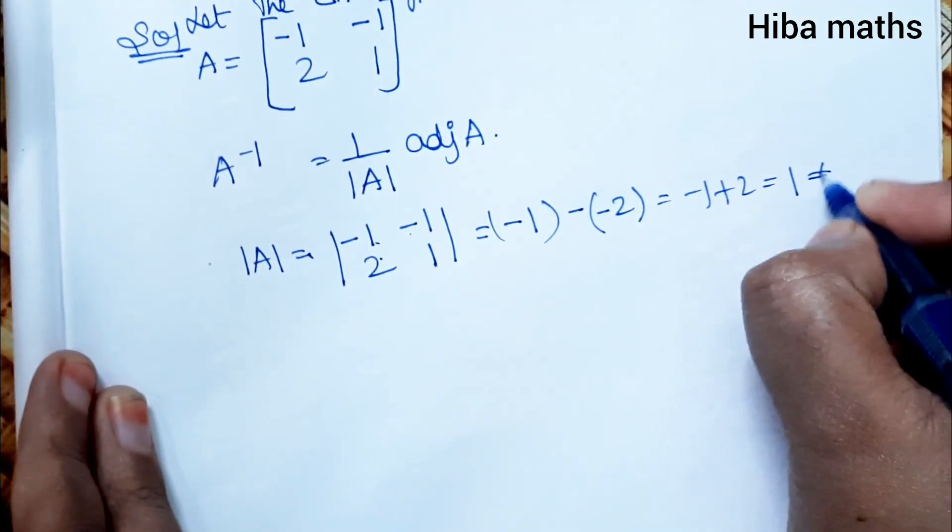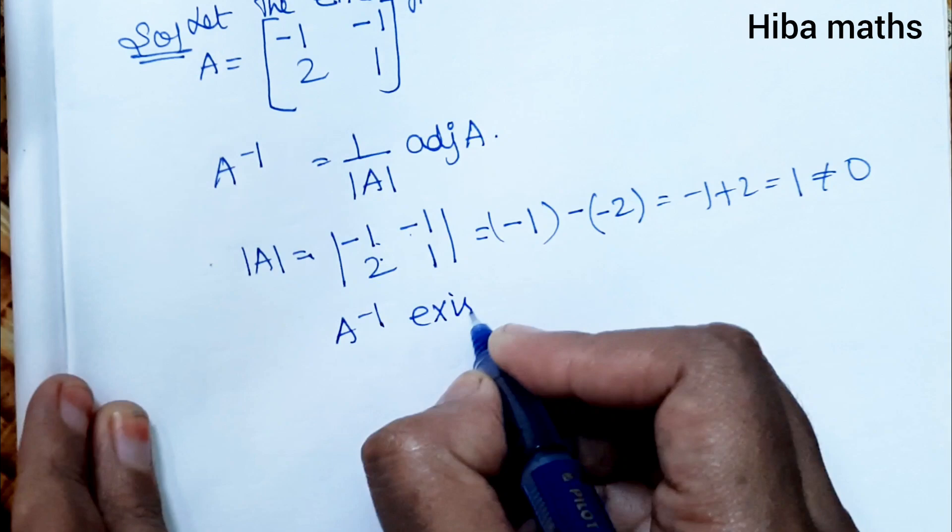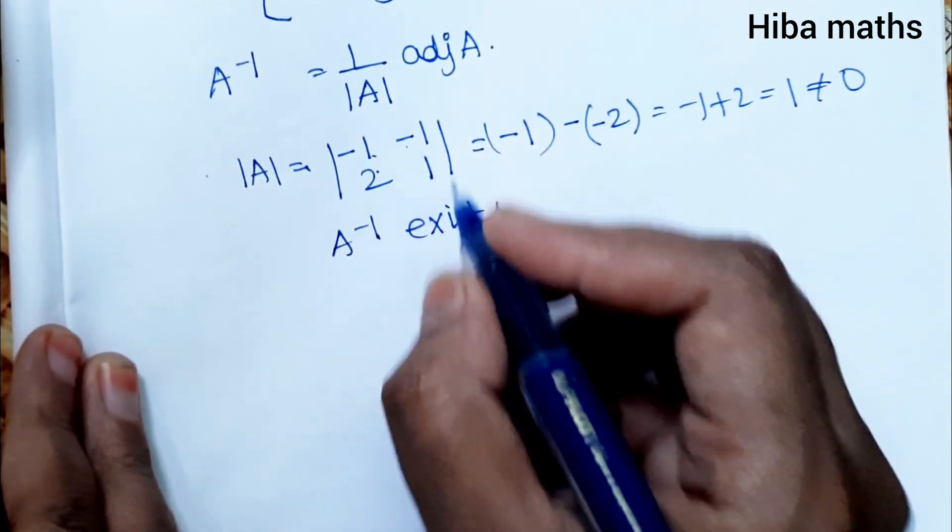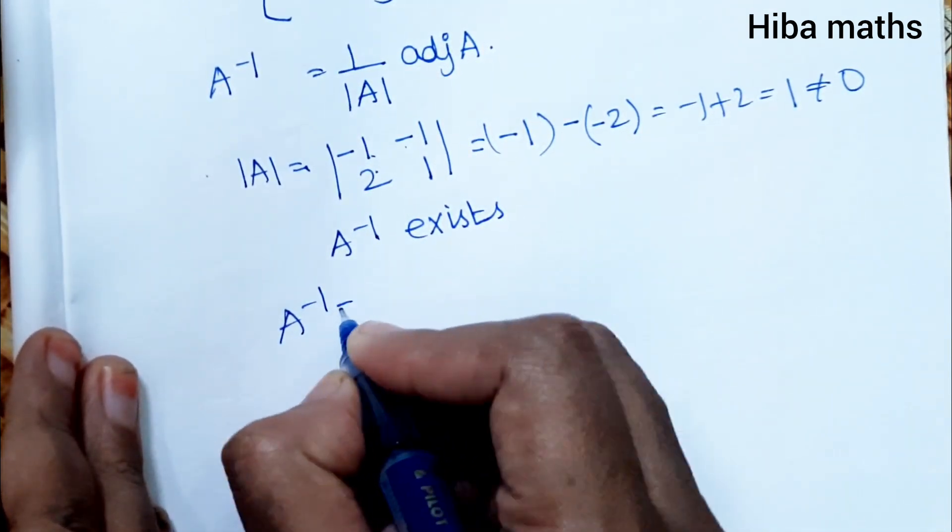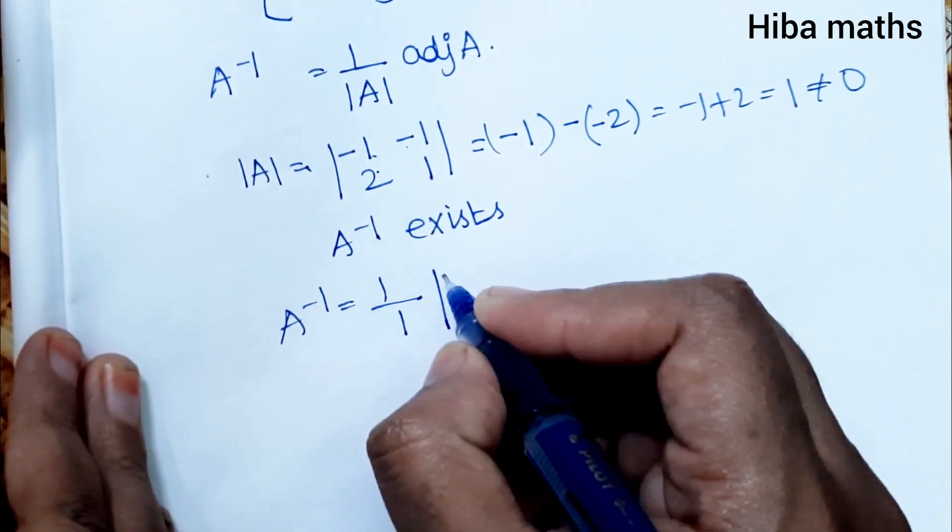Since |A| is not equal to 0, A inverse exists. Then A inverse equals 1 over 1 times adjoint of A.